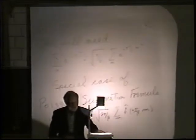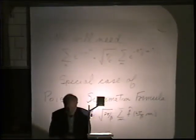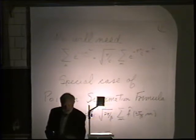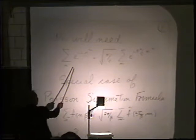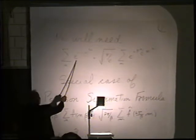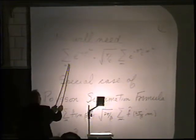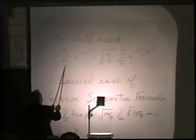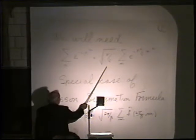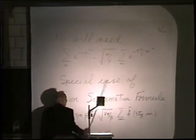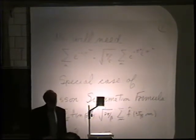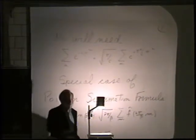In this construction I will need the Poisson summation formula, and I'll need the special case of what happens if you sum over e to the minus C x squared for x an integer over the dual lattice. This is a special case of the Poisson summation formula.